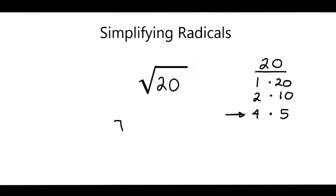So what I will do is break this up into the square root of 4 times the square root of 5. And since I know the square root of 4 is 2, I'll simplify that to be 2 and rewrite this as 2 times the square root of 5.